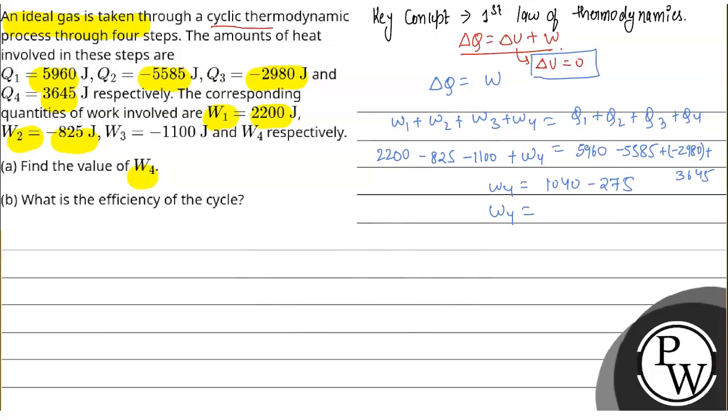We will calculate it over here. 2200 minus 825 minus 1100 equals 275, and we will write 1040 minus 275, so it will come to 765.